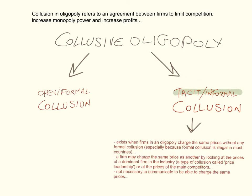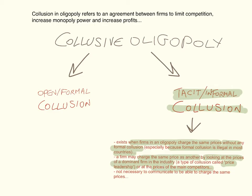Tacit or informal collusion exists when firms in an oligopoly charge the same prices without any open or formal agreement — especially because formal collusion is illegal in most countries. A firm may charge the same price as another by simply looking at the prices of a dominant firm in the industry; this is called price leadership. It is not necessary for firms to communicate to do this, and therefore they protect themselves from any government accusation of open collusion.